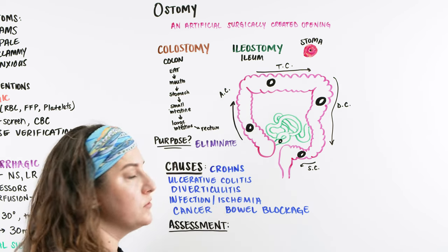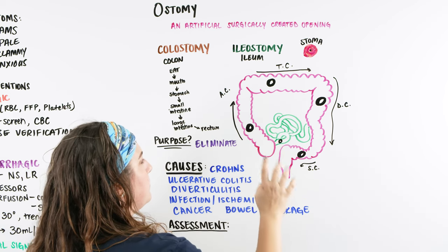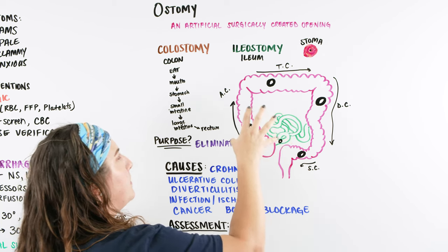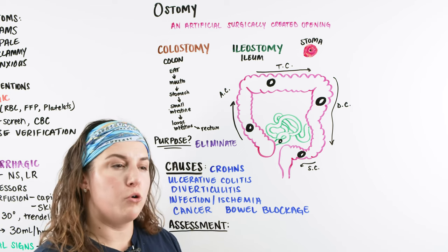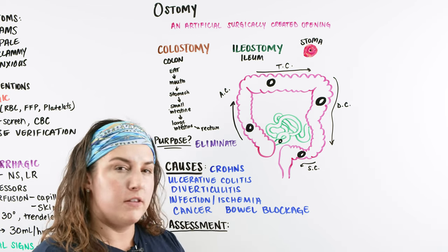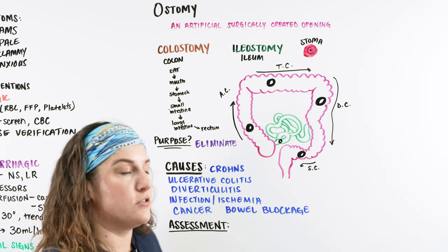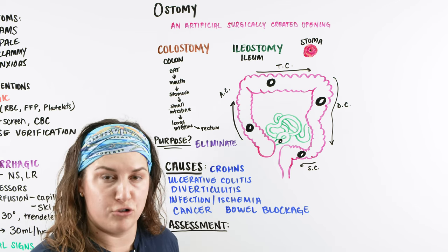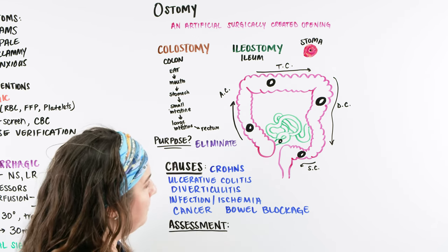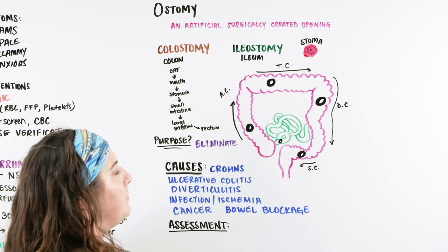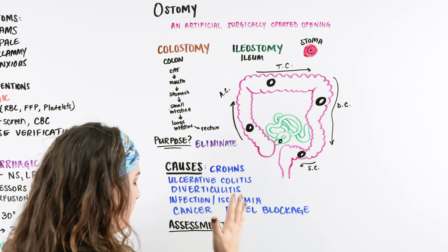When we have a stoma, we want to think about how to assess it and what should be in the colostomy bag. When the patient has an ostomy, we have a bagging system placed around the stoma to collect feces. Because there is no sphincter control over a stoma, it will continually drain. We need to collect it and assess both the skin around it and the contents of the bag.